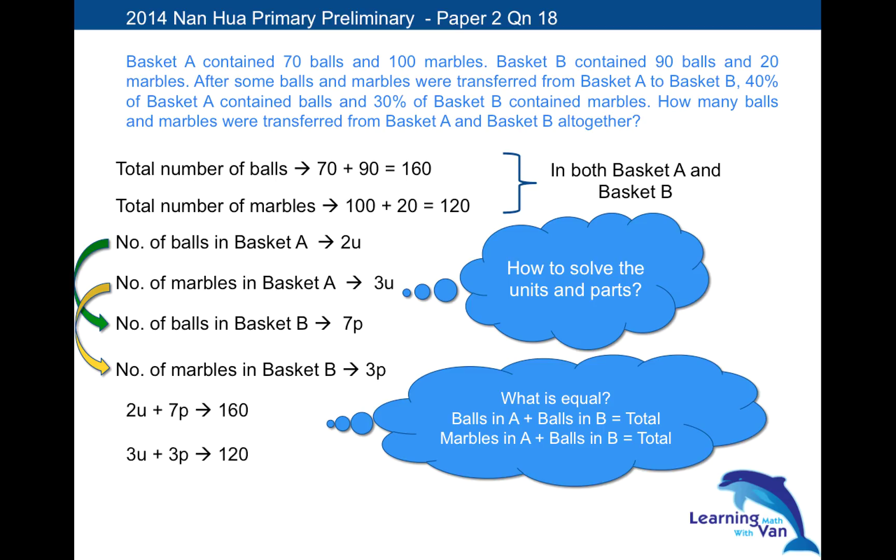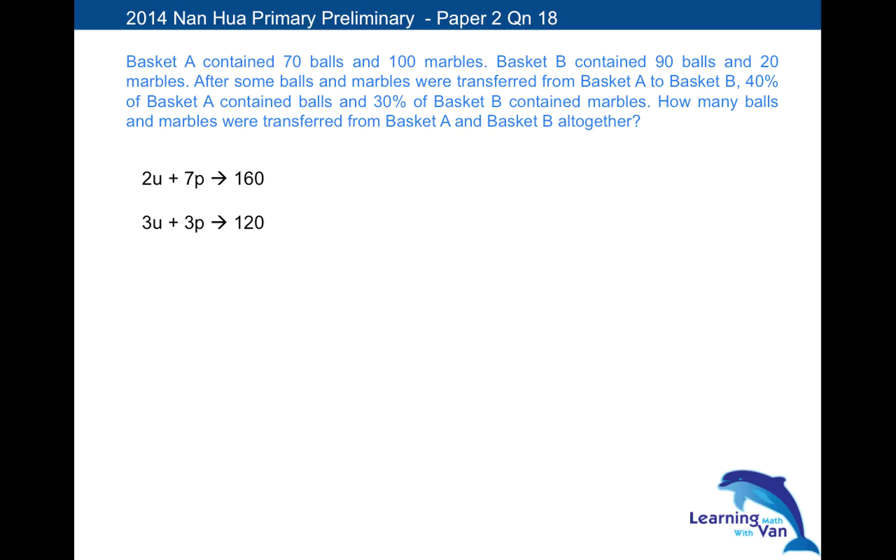So with that, we know that number of balls in basket A is 2 units plus the number of balls in basket B, 7P. So we have an equation here. So 2U plus 7P is arrow 160. Of course we can't use equals. So likewise, with regards to marbles, there's another expression here. So 3U plus 3P is equivalent to 120. So what's next, a student may ask.